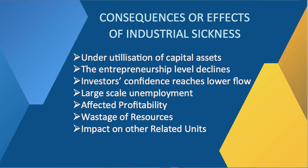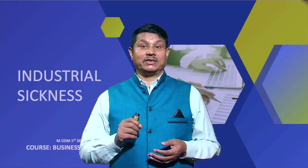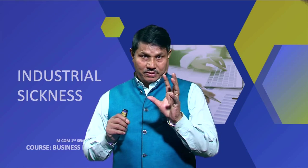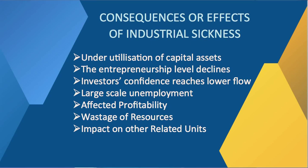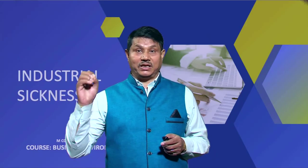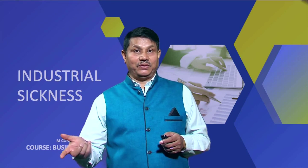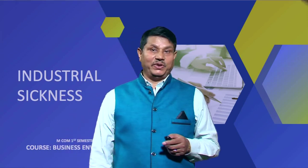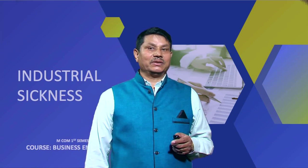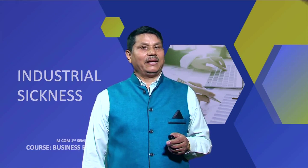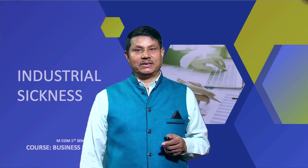Wastage of resources is another consequence of industrial sickness — huge resources invested in sick units are wasted, influencing the economy at a large scale. Another important consequence is the adverse impact on other related units. Closure of one industrial unit affects its suppliers and distributing firms. Financial losses to banks and other lending institutions are caused by locking up funds in these sick units.